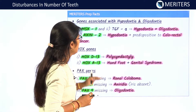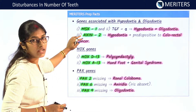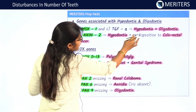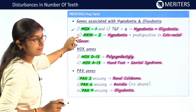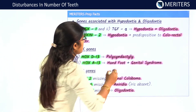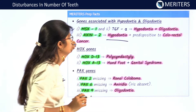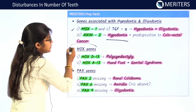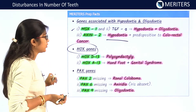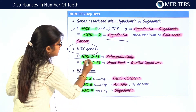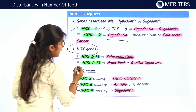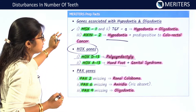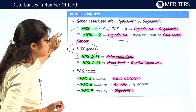Important genes associated with hypodontia and oligodontia: MSX1 and TGF-alpha are responsible for hypodontia and oligodontia. AXL1 and AXL2 are responsible for hypodontia plus predisposition to colorectal cancer. HOX genes are very important — HOXD13 is responsible for polysyndactyly, and HOXA13 is responsible for hand-foot-and-genital syndrome.